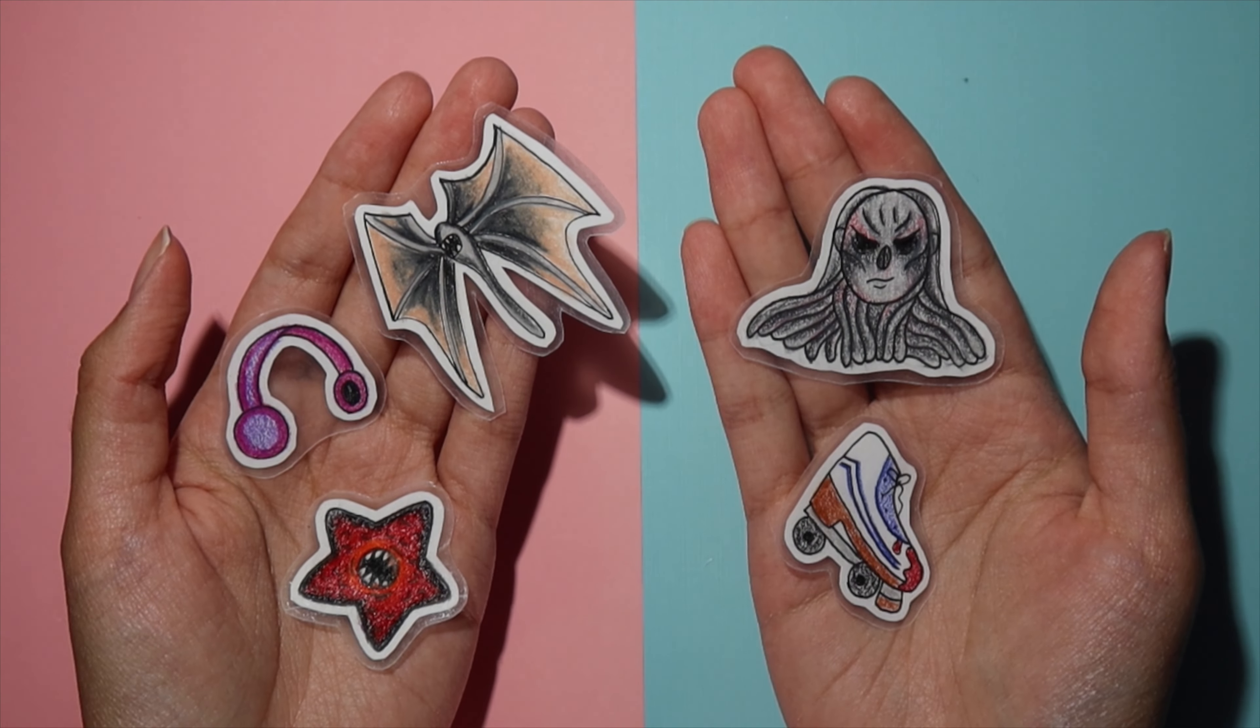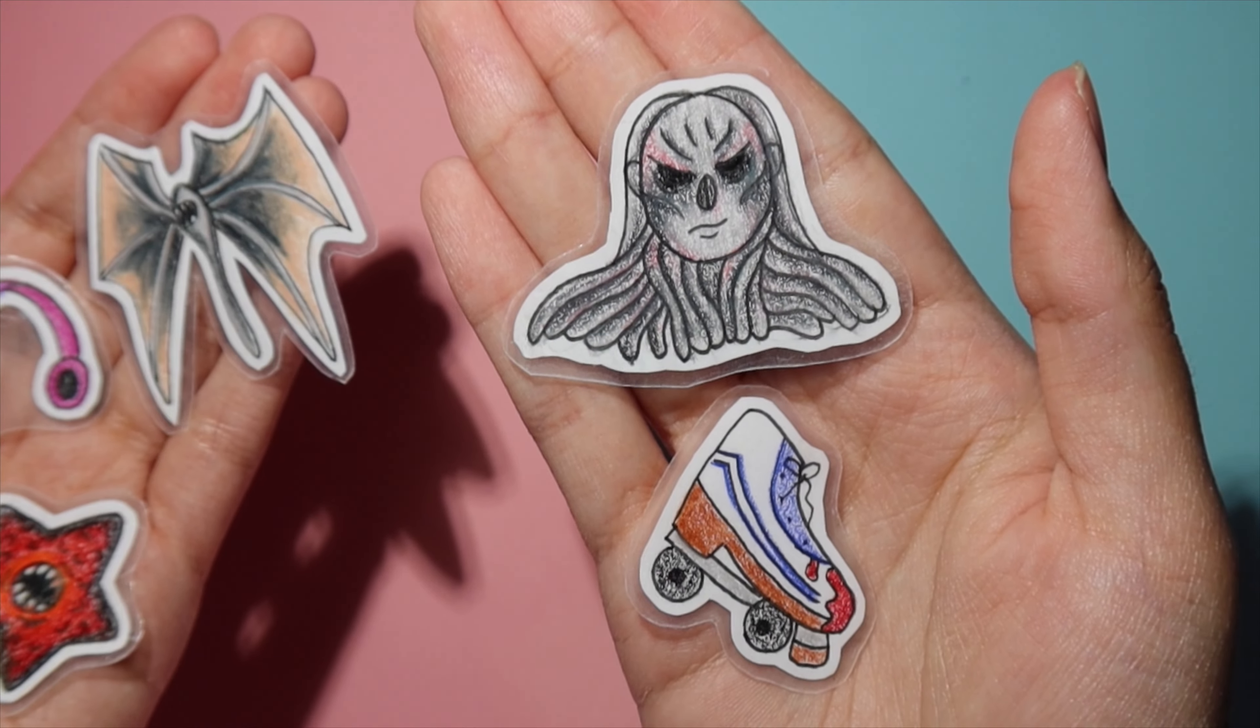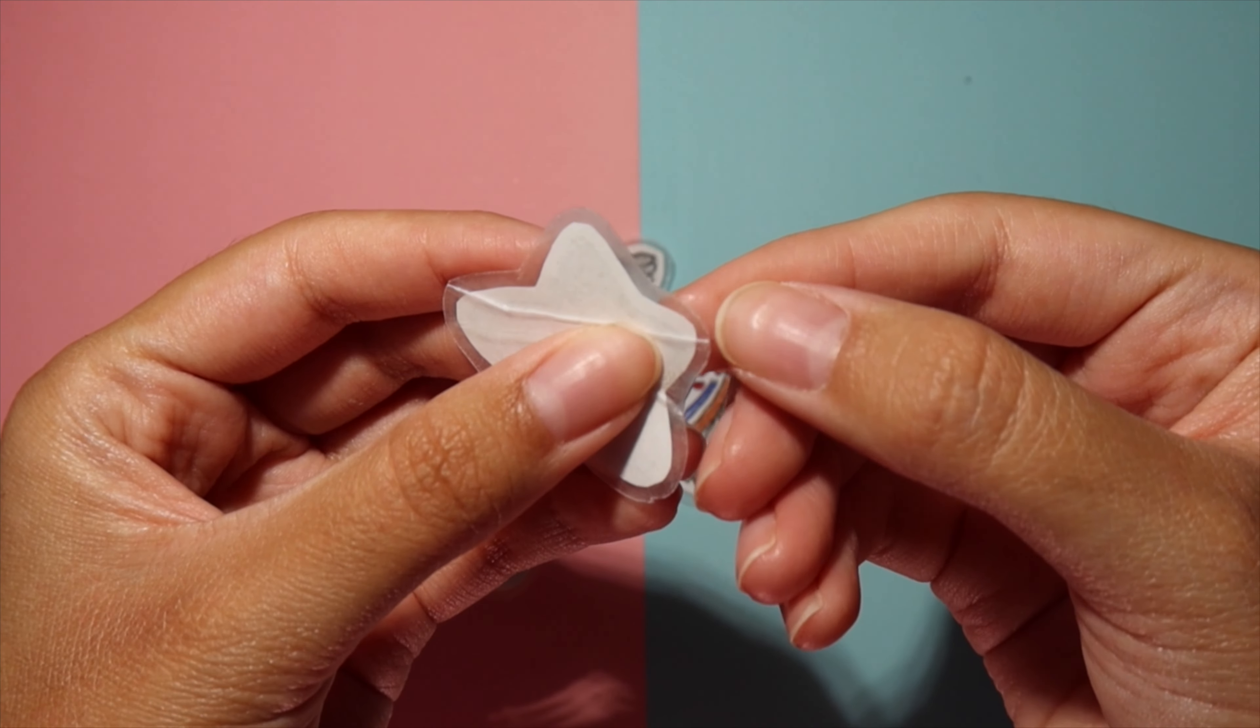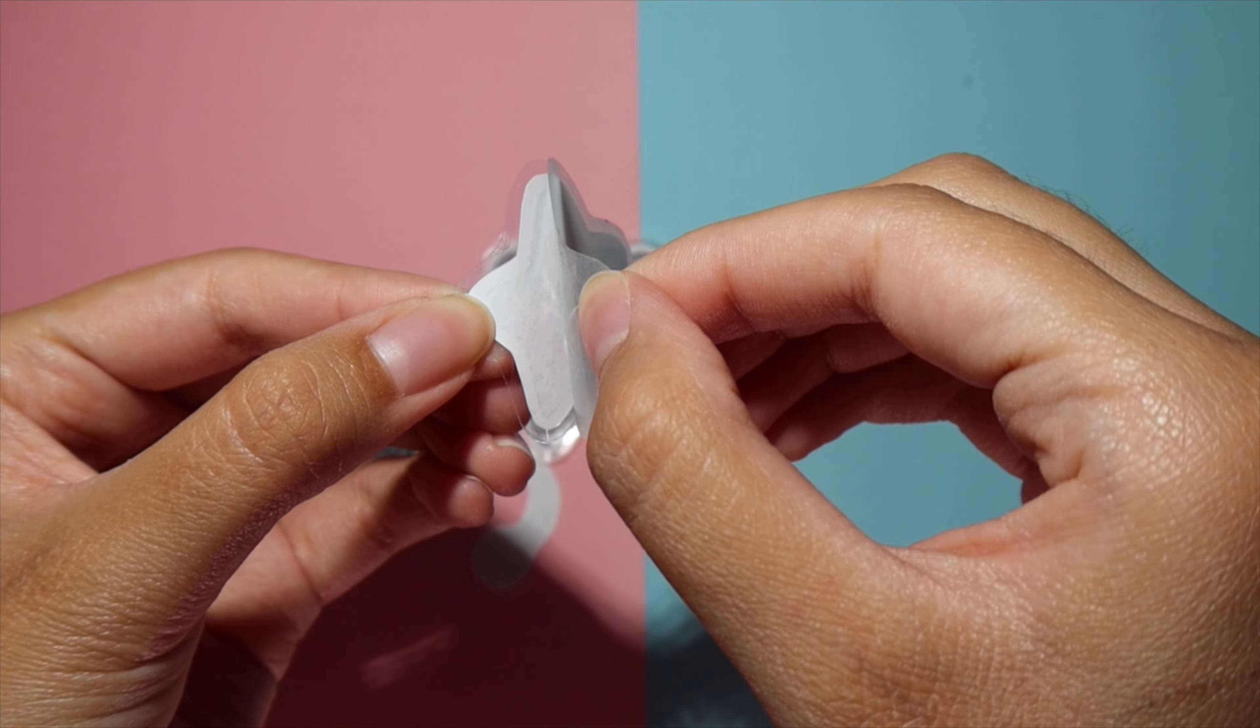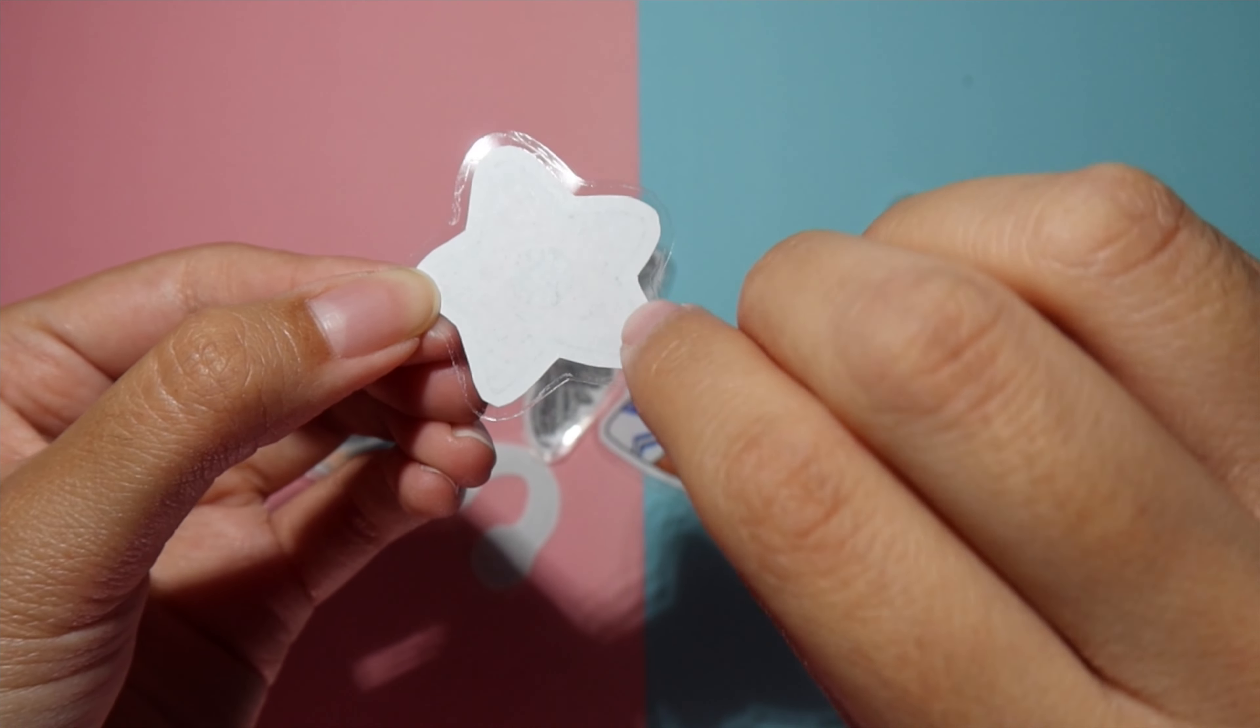And this is what all of our stickers turned out like. They are individual stickers, but of course, if you wanted to, you could create a sticker sheet as well. You can turn your sticker around and peel off the backing of the wax paper and reveal your sticker and stick it wherever you'd like.